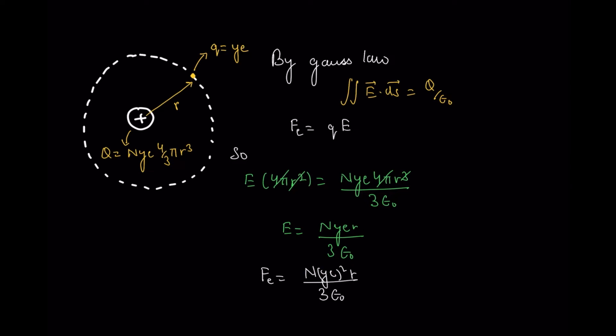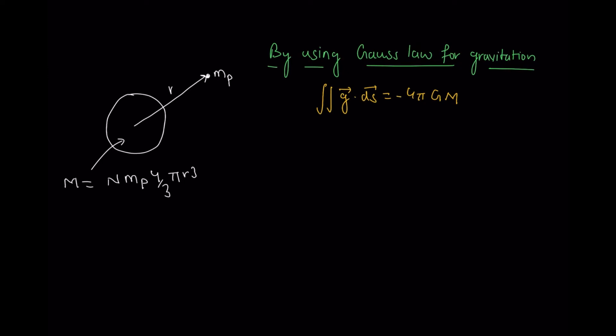In the same way, let's calculate the attractive gravitational force. Again, I have the mass distributed all over the universe. By using Gauss law for gravitation, the surface integral of g·ds = -4πGM. Fg = mpg. So g·4πr² = -4Gnmp·4πr³/3. They cancel out in the same way, and g = -4π/3·Gnmp·r, and force due to gravity is Fg = -4/3·Gnmp²r.